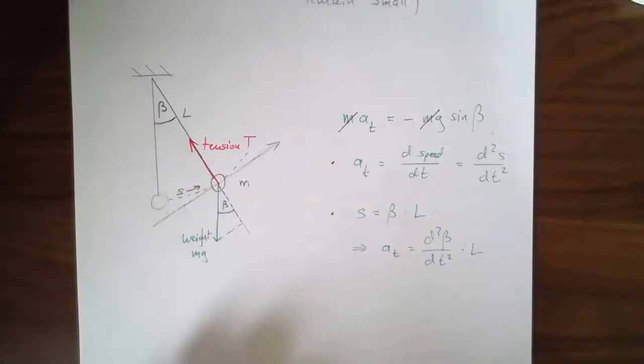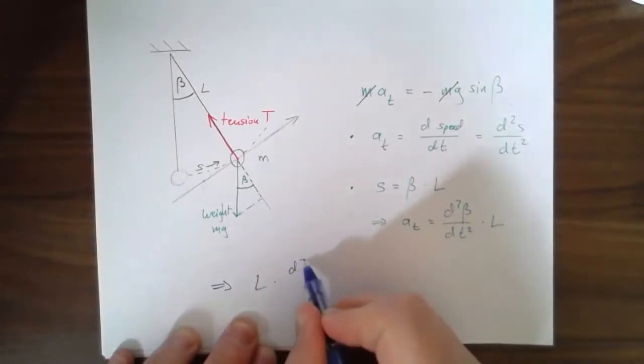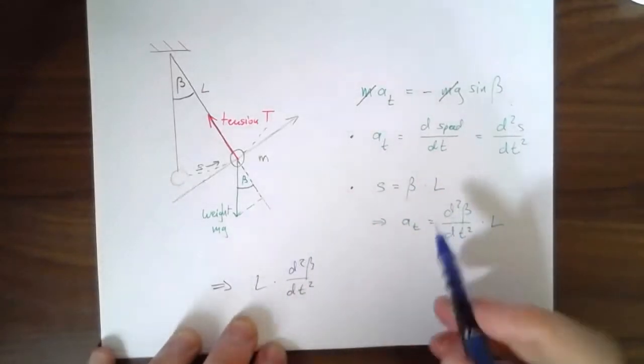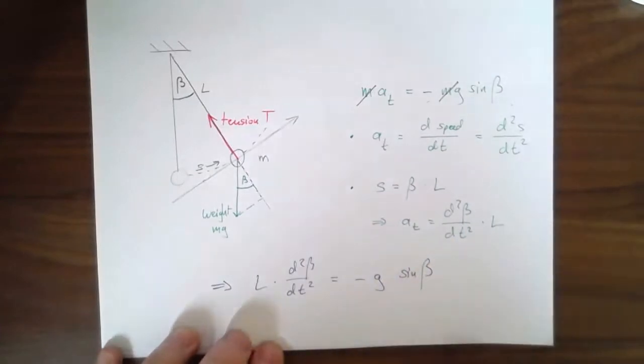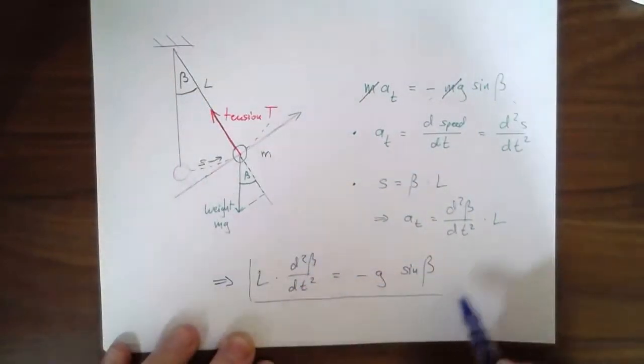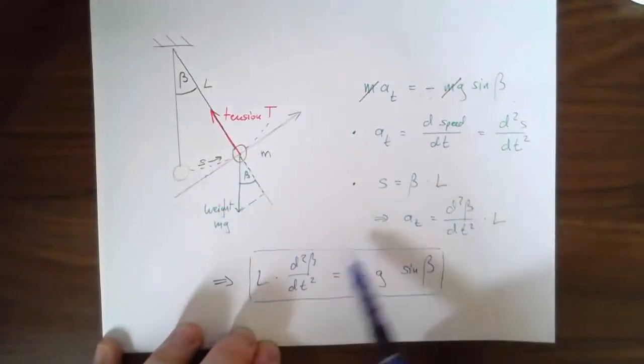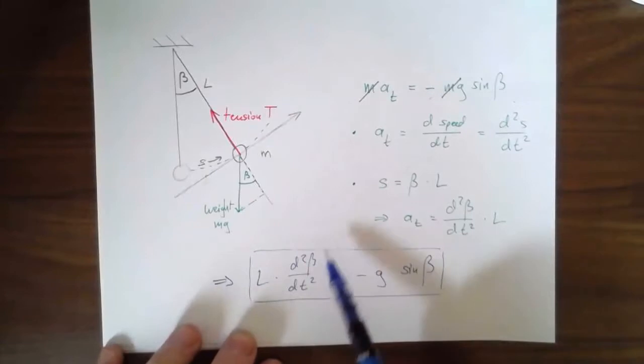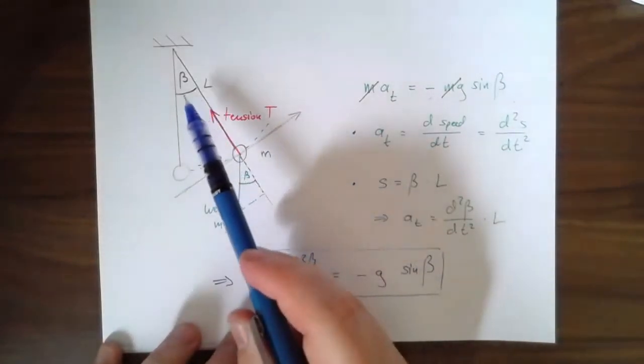So what am I going to get? I'm going to get the following equation. The equation I'm getting is that l times d2 beta dt squared, but that's this part here, is equal to minus g times sine of beta. That is my equation of motion. It's an equation of motion expressed for the angle as our variable. That's totally fine.